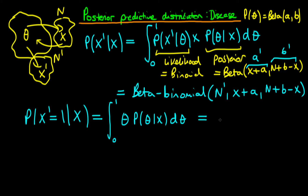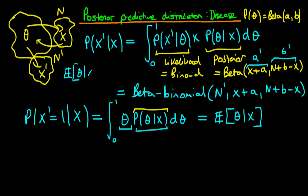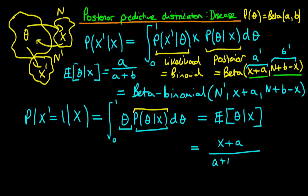This is exactly equivalent to the expected value of theta given the observed data x, since we have an integral of the value we're taking the expectation of times the probability density. Because the posterior is a beta distribution, we already know that the expected value of theta for a beta with parameters a and b is a over a plus b. Here, using the updated parameters a-primed and b-primed — that is, x plus a and n plus b minus x — the expectation becomes (x plus a) divided by (a plus b plus n).